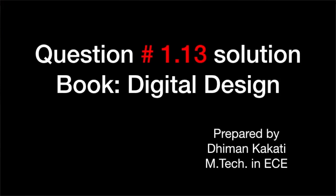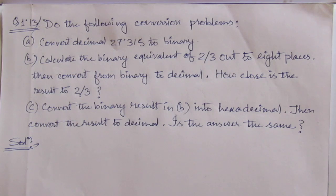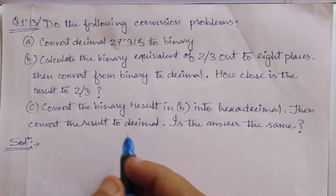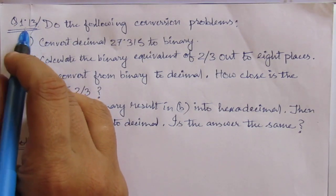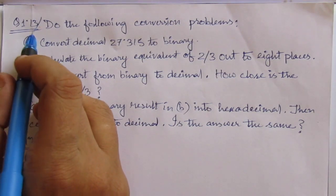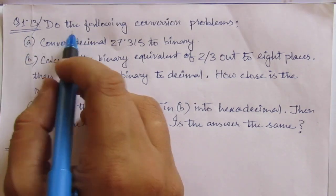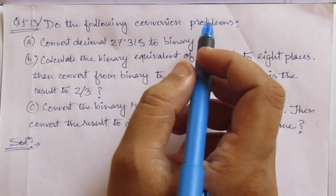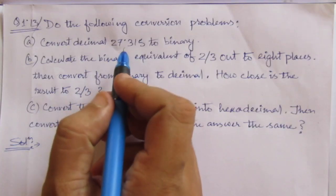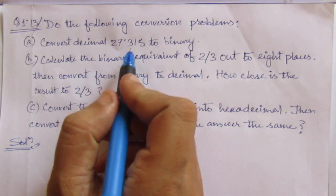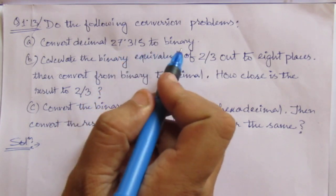Welcome to this tutorial series in digital electronics. We are solving problems from the book 'Digital Design' by Maurice Mano and Michael Ciletti. In this video we will solve problem number 1.13 from chapter 1: convert the decimal number 27.315 to binary.